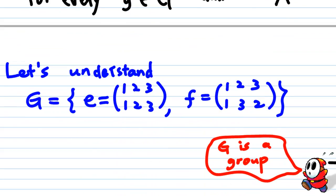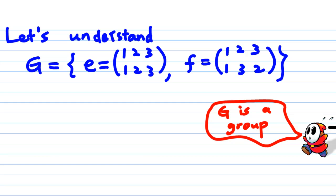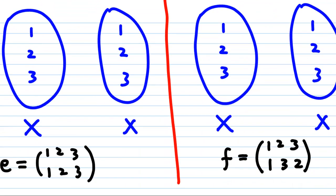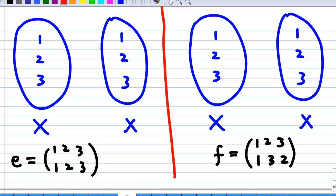But before that, let's try to understand the group G first. It consists of two-line form e, which is identity, and f, 1, 2, 3 and 1, 3, 2 in two-line form. This G is a group, and what this group is doing is a permutation of three symbols 1, 2, 3.